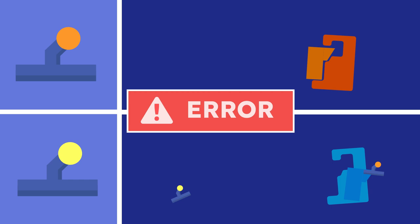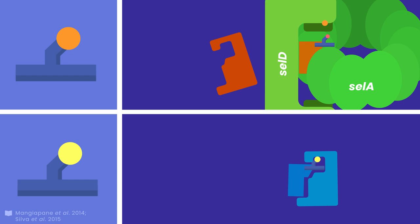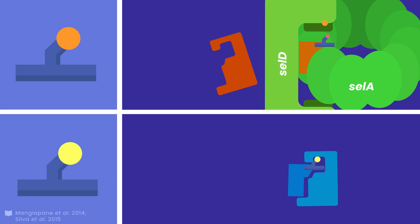The gene products of selA and selD help transform this serine into selenocysteine, and now it's ready to be inserted into bacterial protein. The human selenocysteine pathway is a bit more complicated, but the overall mechanism is the same.